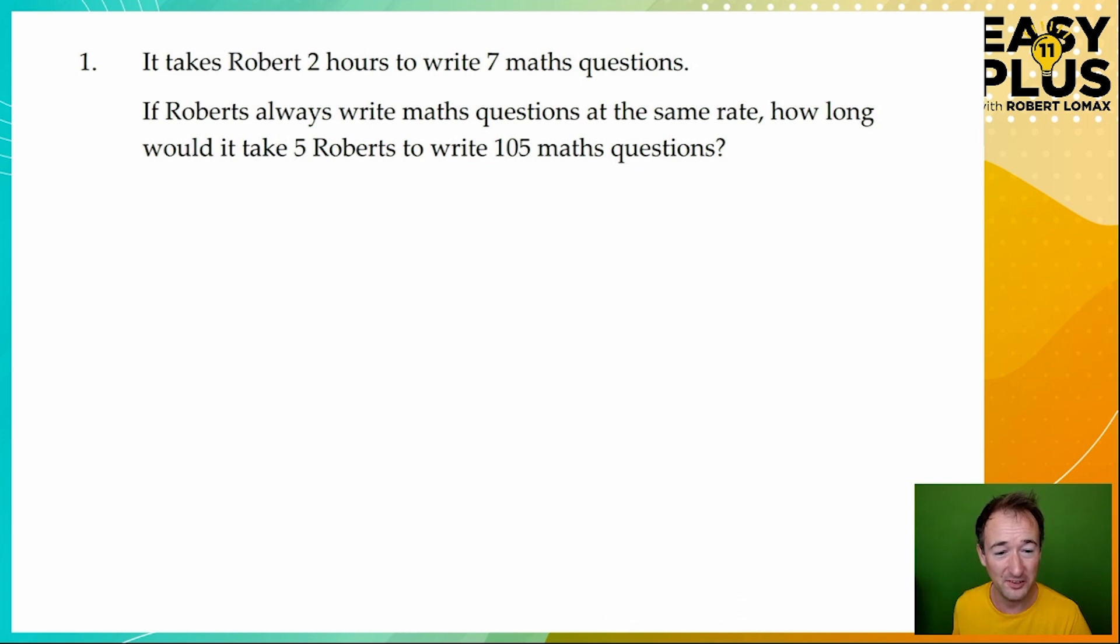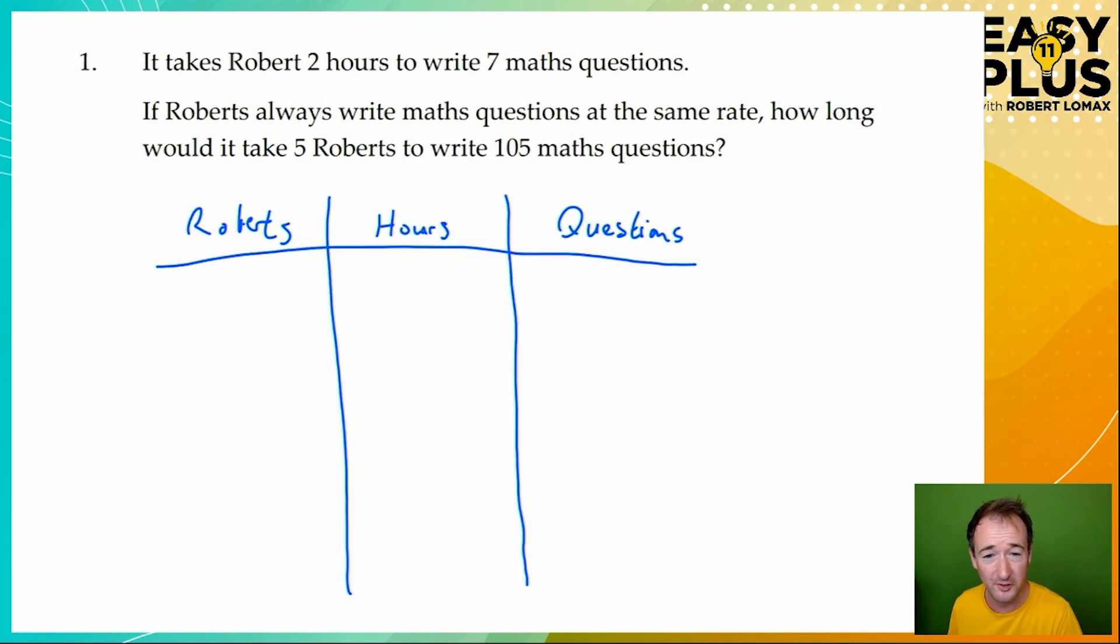And the basic principle is that you need to start off by building a table like this. So I've put the columns Roberts, hours, and questions. Working in an exam, you could just write R, H, and Q, or something like that, just as long as it's clear for you, and as long as the examiner can work out what's going on. And we're going to start off by putting in the information that we already know.